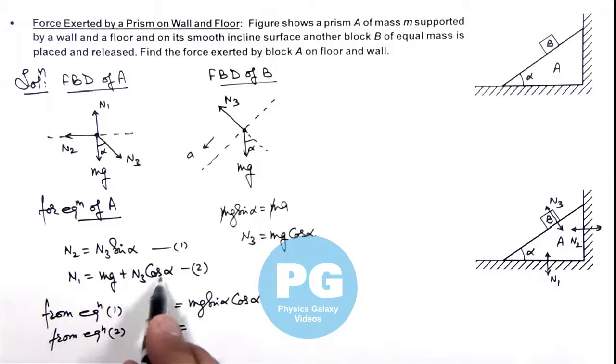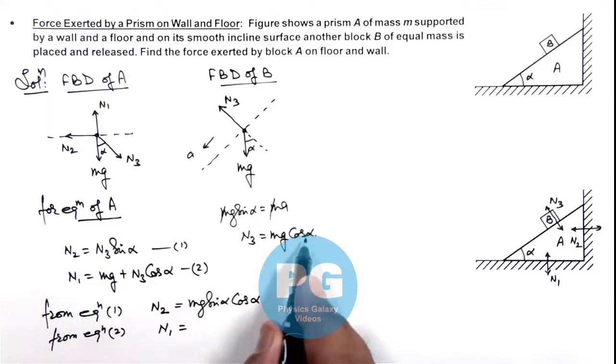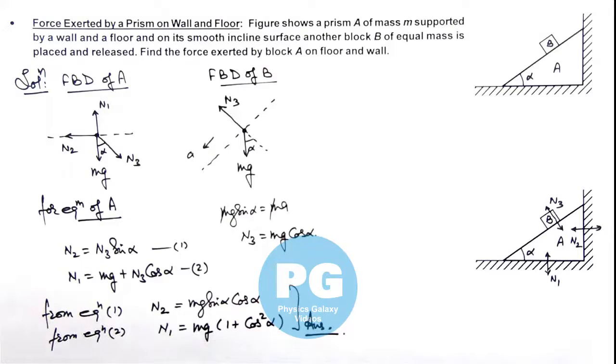This is mg plus N3 cos alpha which is mg cos alpha. So when we substitute N3, this will give us mg multiplied by 1 plus cos square alpha. So these are the final results of this problem: the forces on prism due to wall as well as on floor.